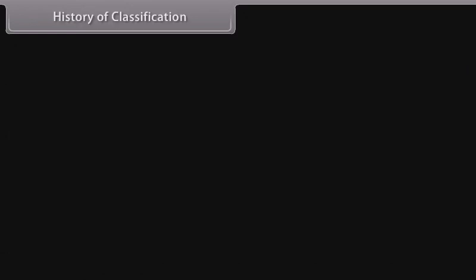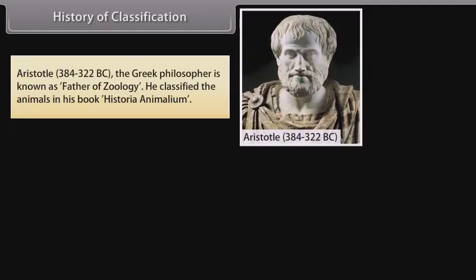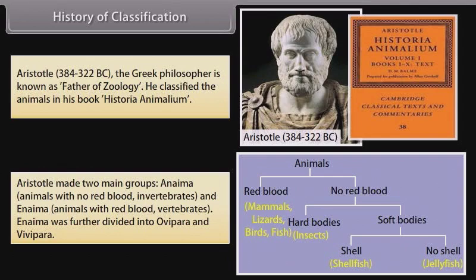History of Classification: Aristotle (384–322 BC), the Greek philosopher known as the father of zoology, classified animals in his book Historia Animalium. He made two main groups: Anaima, animals with no red blood (invertebrates), and Enhaima, animals with red blood (vertebrates). Anaima was further divided into ovipara and vivipara.